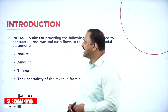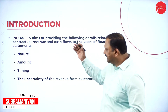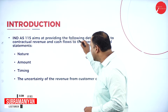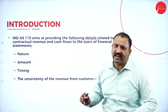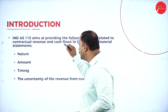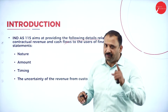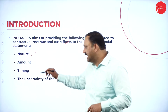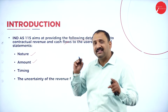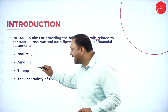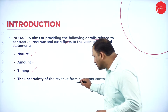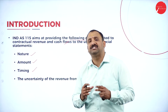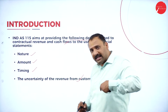So let's have a look into it. IND AS 115 aims at providing the following details in the contractual revenue cash flows to the user. First is the nature of the contract. Second is the amount that is involved. Third is the timing factor. And then we are also going to talk about uncertainty of the revenue from customer contracts.